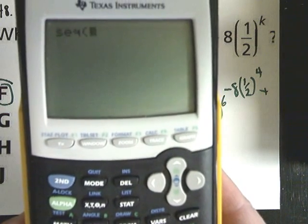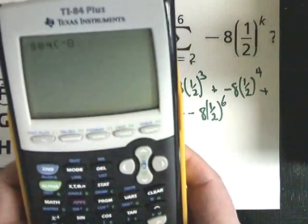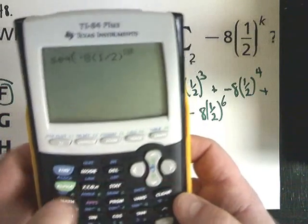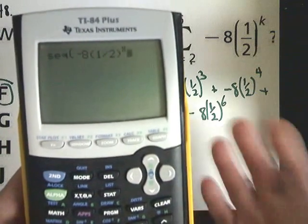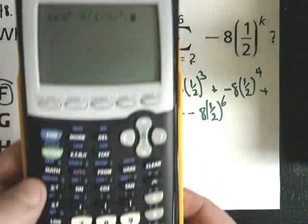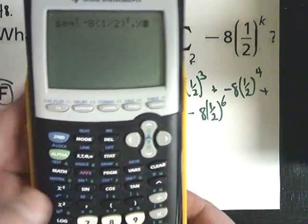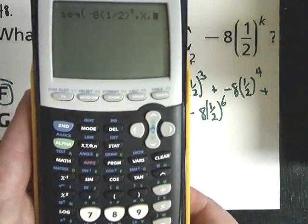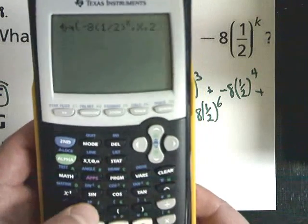I'm going to type in the first thing I need, which is the actual generic term, so negative 8, 1 divided by 2, raised to the x power. Then you need to make sure you click over. From here I'm going to tell it what the variable is that I'm going to use. So I'm going to go down and hit the comma button, which is right above 7, so I can separate it. Click the x to tell it that's the variable, and then I'm ready to type in the next term. So hit comma again.